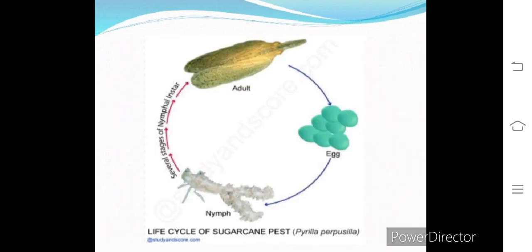In this diagram you can see the life cycle of Pyrilla perpusilla. Eggs are laid on the upper side of the leaves and convert into nymphs, which are whitish or creamish in color. The nymph develops into an adult by passing through several stages — first instar through fifth instar — as shown by the arrows. After the fifth instar the nymph develops into an adult, which after maturation is ready to produce eggs again.